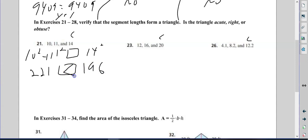So here we have c squared is less than 221. 221 is greater. So when a squared plus b squared is greater, that makes it acute.